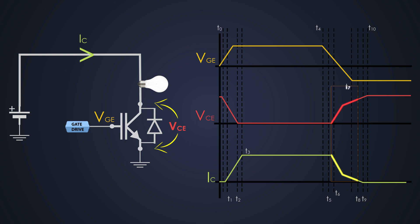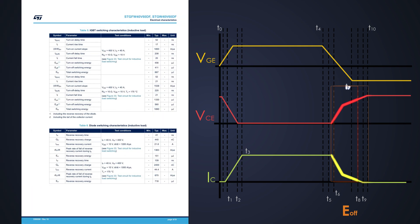The turn-on time and turn-off time definitions of the IGBT are a little tricky, but now you have understood them. We also need to see the switching energy loss during turn-on and turn-off. The amount of energy loss during turn-on until the collector-emitter voltage reaches zero is considered as turn-on switching energy. And the amount of energy loss during turn-off until the collector-emitter voltage reaches the rated value is called turn-off switching energy. These parameters are always mentioned in the IGBT's datasheet.